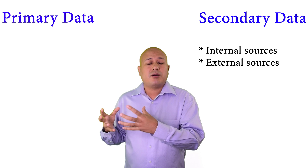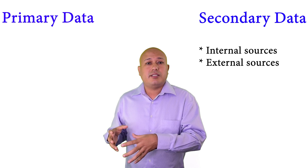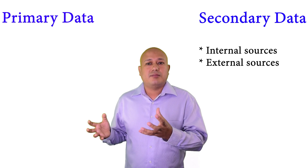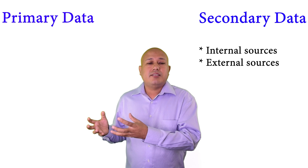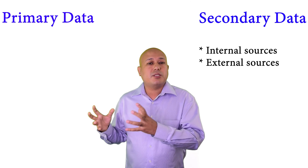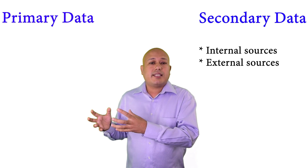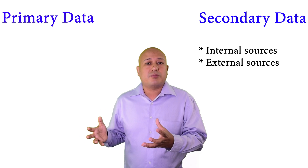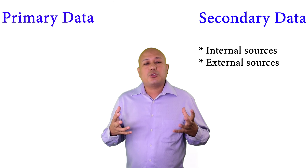There are also external sources of secondary data, such as government data or third-party sources like IRI and AC Nielsen, which collect a lot of secondary data. These can be helpful, but external sources may have problems with accuracy and the other issues we've already discussed regarding secondary data. Now, when we talk about primary data, its sources can be classified into three types.